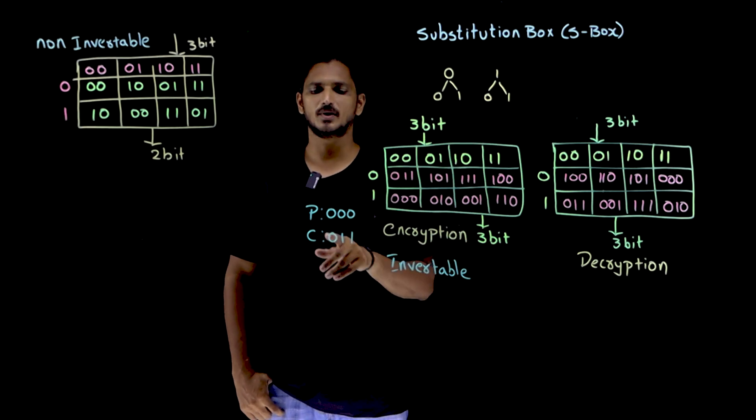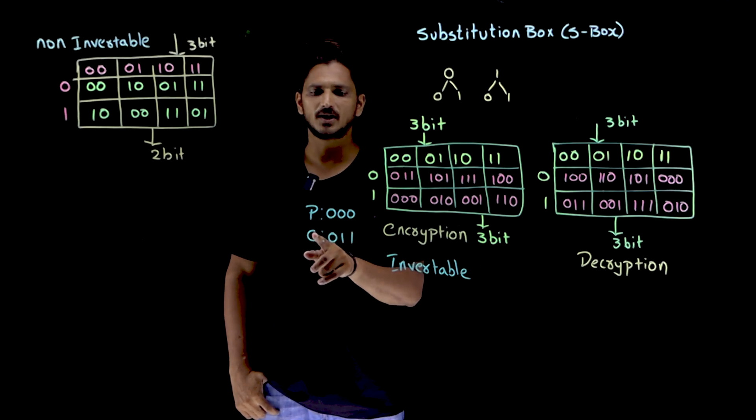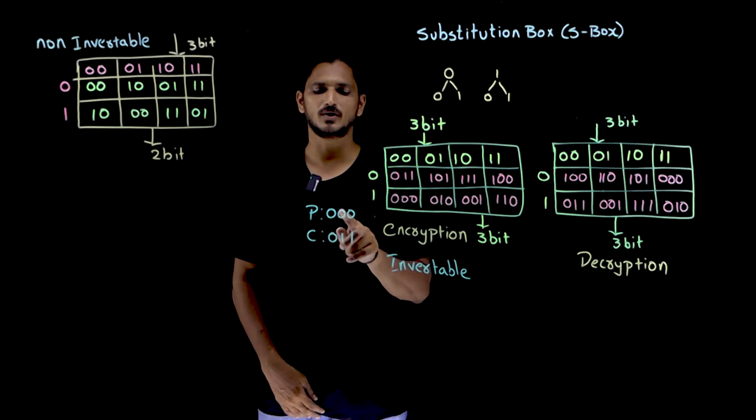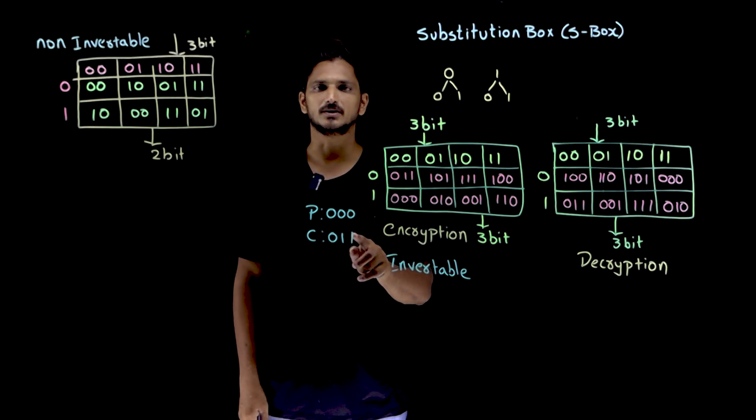Let us take an example. If your plaintext is 0 0 0, our ciphertext is 0 1 1. In place of first 0, we have replaced 0. In place of second 0, 1 is replaced. In place of third 0, 1 is replaced.